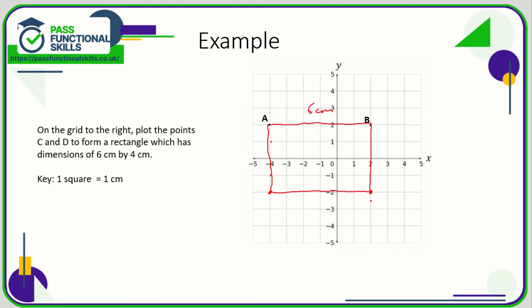So the points C and D are here and here, or they could be the other way around. You could be asked to give the coordinates for these points. In which case, for C, the coordinates would be—remember we're going across first—